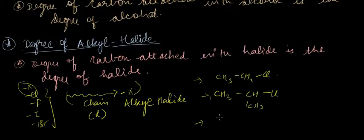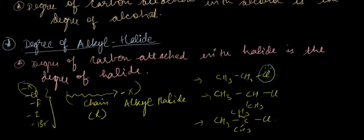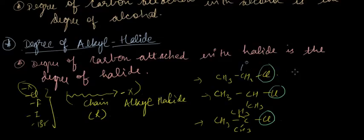For example: CH3CH2Cl is an alkyl halide. As per the definition, the degree of this alkyl halide is one because the degree of this carbon atom is one. Similarly the degree of this carbon atom is two, so the degree of this alkyl halide is two. The degree of this carbon atom is three, so the degree of this alkyl halide is three.